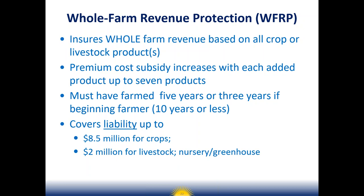You must have farmed at least five years, or three years if you're a beginning farmer. For this policy only, the definition of a beginning farmer is 10 years or less of farming — and you get an additional premium subsidy as well as reduced record requirements. This is not a policy for a brand-new farmer who's never had any production experience. You have to develop at least three years of revenue history. The liability for crops can't exceed $8.5 million, and for livestock no more than $2 million.